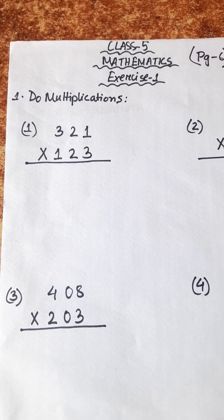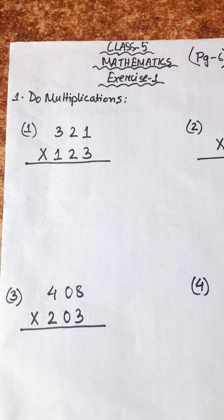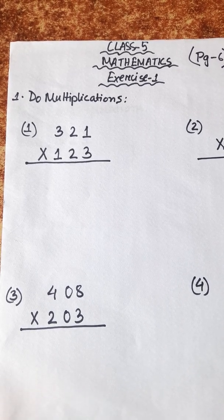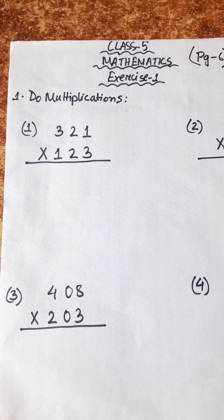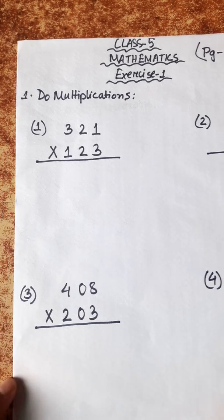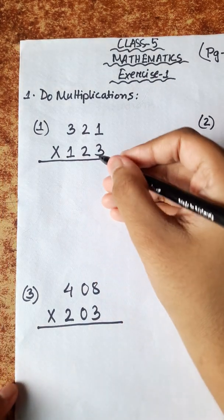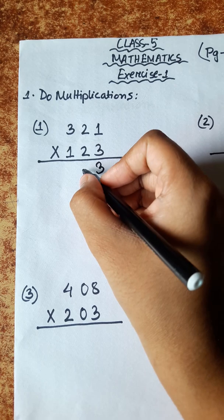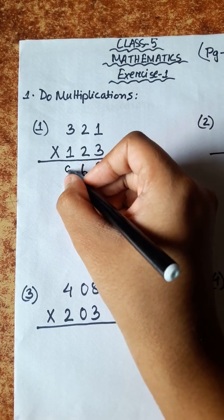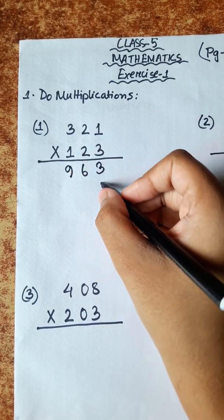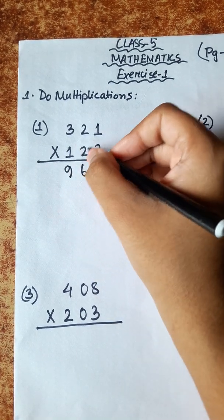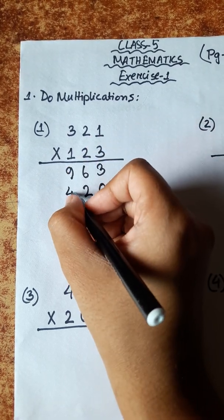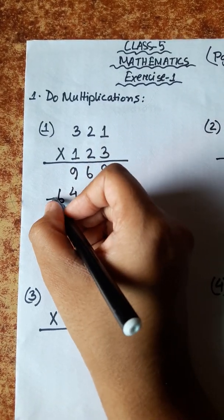Our first math problem is a multiplication. Problem Number 1: 321 into 123. Steps: 3103, 3206, 339, 2102, 2204, 3206.